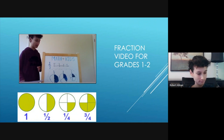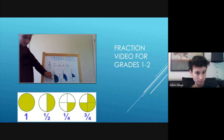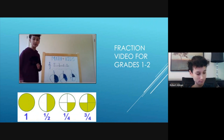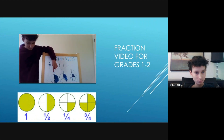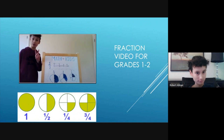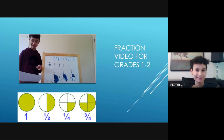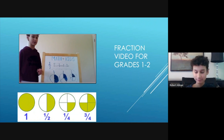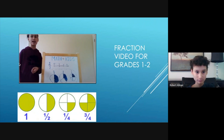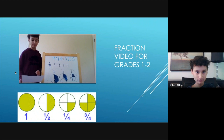Let's say that we want to go to the pizza shop and we want one half of a pizza. This means that we want to cut the pizza into two pieces but only receive one piece. If we want one third, then we have to cut the pizza into three pieces and receive one piece. If we want one fourth, then we cut the pizza into four pieces and receive one piece.